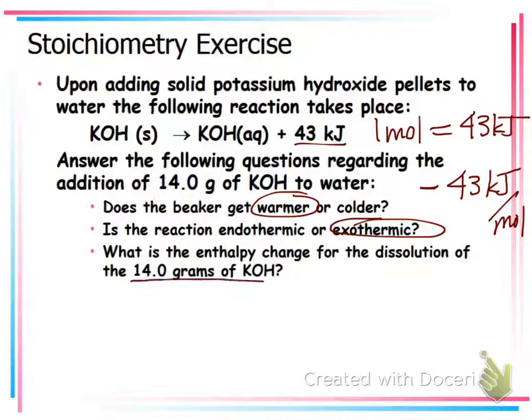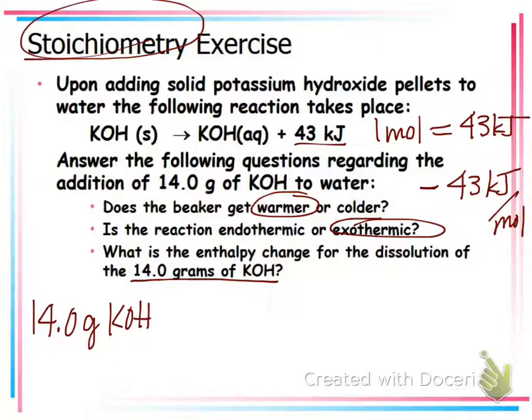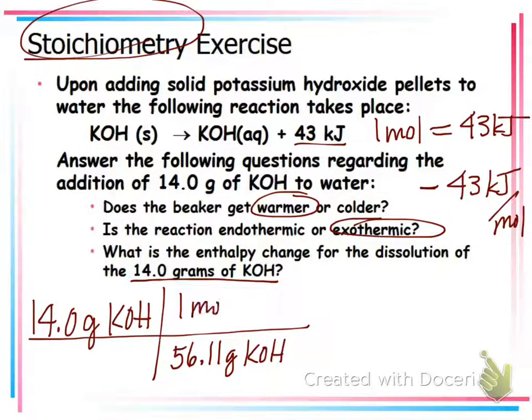So, this one wants to know what happens when I dissolve 14 grams. So, I have to go grams to moles to see how much that would be for 14 grams. So, this is way, this is back to our favorite word. It's stoichiometry. So, if I have 14 grams of KOH, I need to get to moles. What do I need to do to go grams to moles? I need to molar mass it, right? So, 56.11 is the molar mass of KOH.